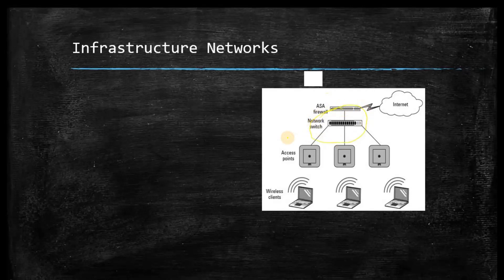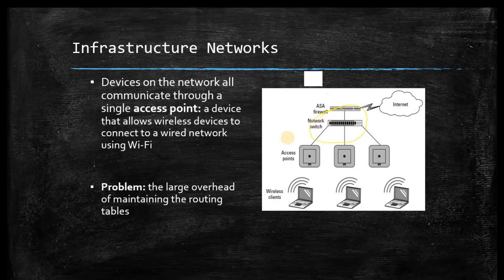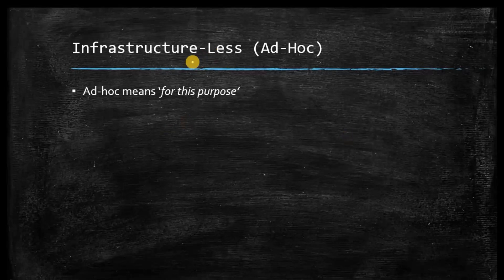In an infrastructure network there is one central access point that is responsible for managing the wireless network. This access point keeps the routing information inside it and is responsible for routing different packets in the network. All devices are connected to this single central access point, which allows wireless devices to connect to a wired network using Wi-Fi. The problem with this type of network is overload on the central access point, and whenever this access point fails, the complete wireless network will get failed.